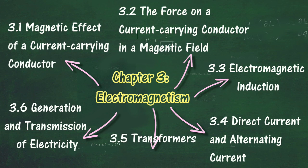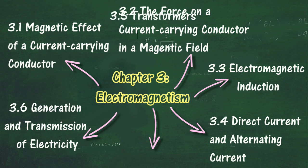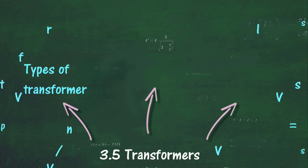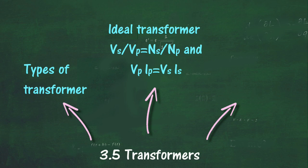In section 3.5, we will learn about transformers. At the end of this section, you should be able to: describe the structure and the operating principle of a simple transformer, compare and contrast a step-up transformer and a step-down transformer, state that Vs/Vp = Ns/Np for an ideal transformer, and state that the power of the primary coil equals the power of the secondary coil for an ideal transformer, describe the energy losses in a transformer, describe ways to improve the efficiency of a transformer, and solve problems involving transformers.